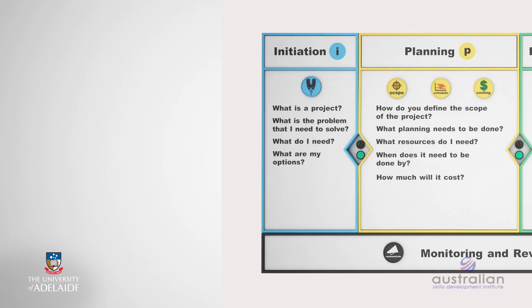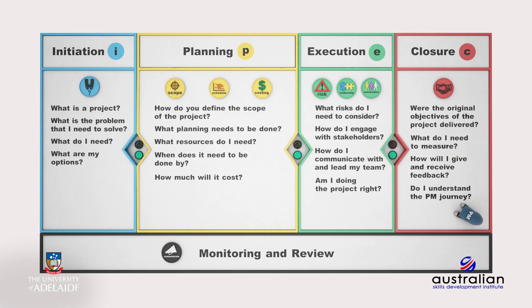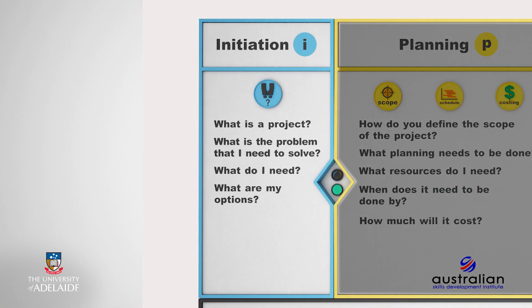In addition, project management follows a distinct linear process or journey, which is known as the project management lifecycle. The lifecycle has four phases. The lifecycle begins with initiation, which is the starting point of any project. It is usually the shortest phase, but the most important because it sets up the foundation of the project. It is in this phase that you flesh out the project objectives, success criteria, and high-level plan.